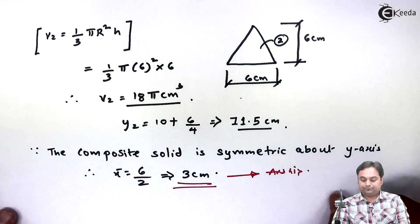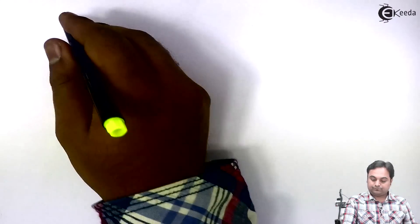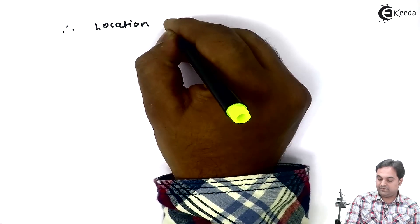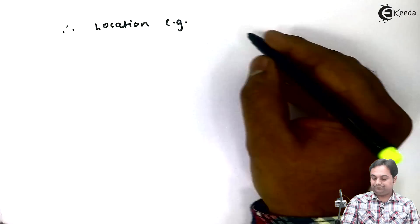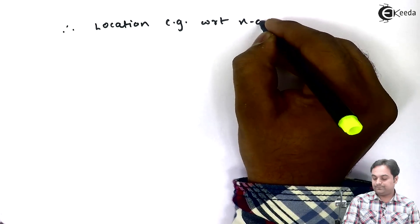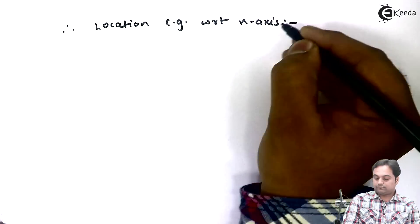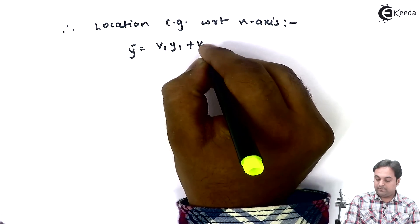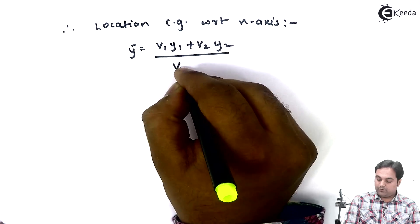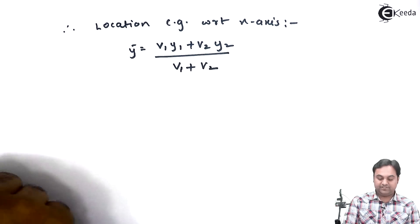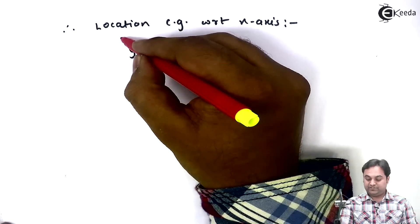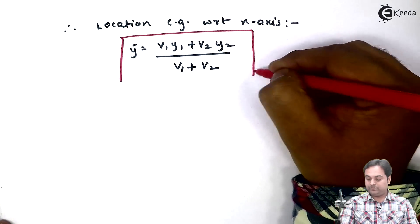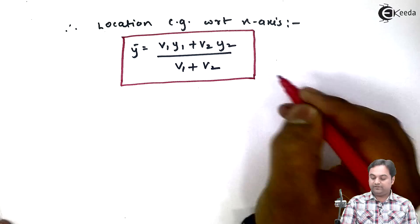Now I will calculate Y bar. Therefore location of CG with respect to X axis, that is Y bar, is equal to V1 Y1 plus V2 Y2 upon V1 plus V2. See the change in formula. In case of centroid it was A1 Y1 plus A2 Y2. So here in center of gravity we are dealing in volume.